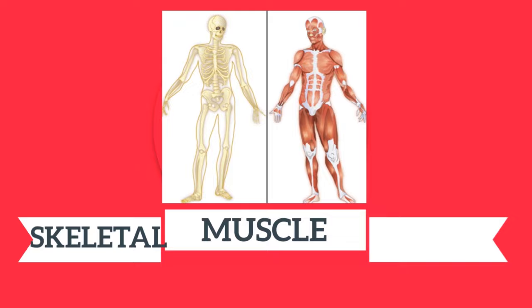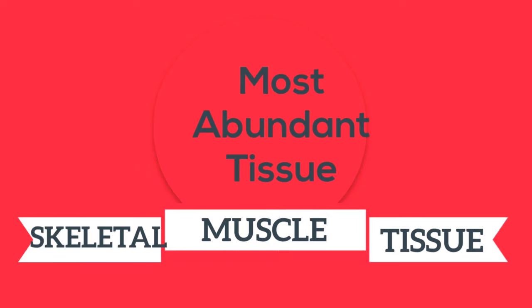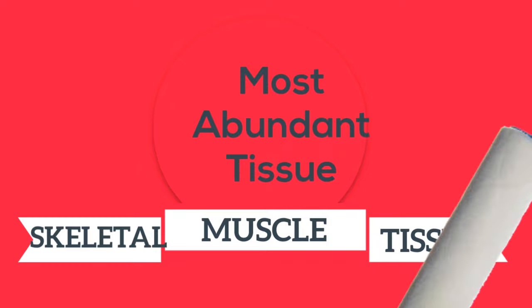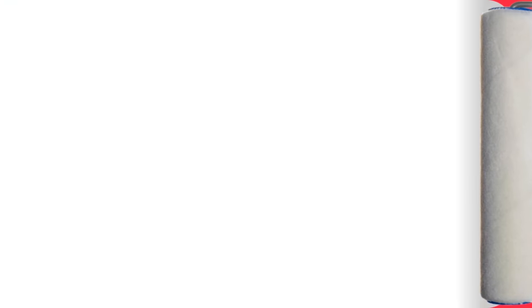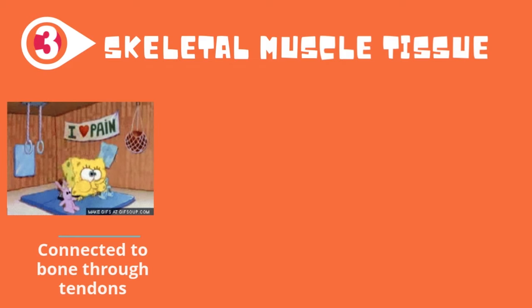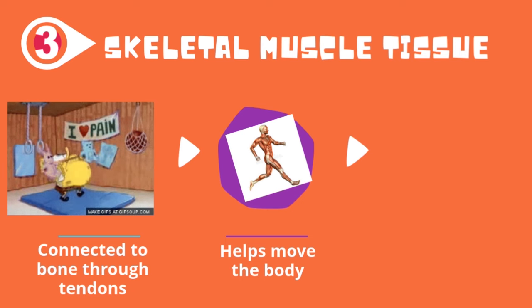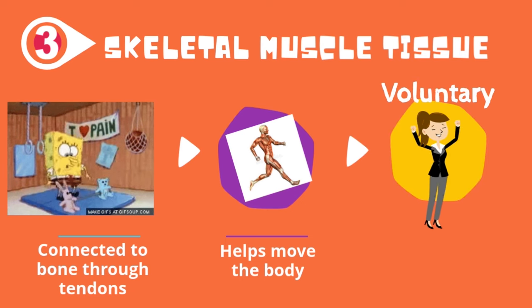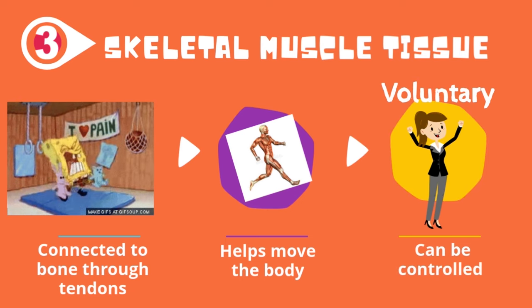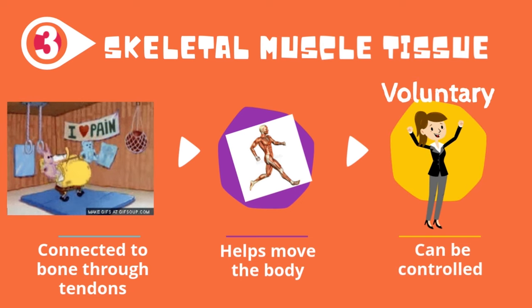The third type of muscle tissue is skeletal muscle tissue. It is the most abundant tissue that we have in our body. Skeletal muscle tissue is connected to bone through tendons. It helps move the body, and it is involuntary, which means you have control.